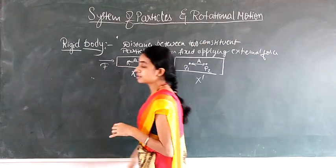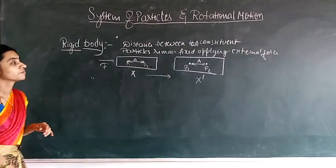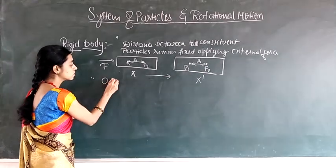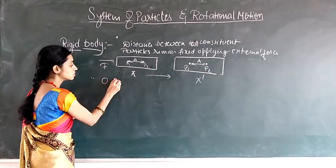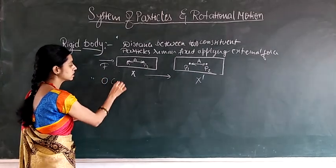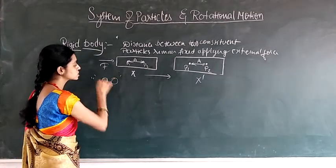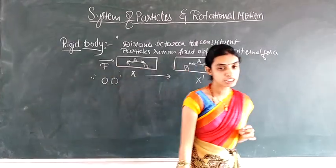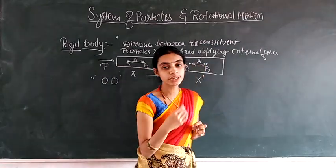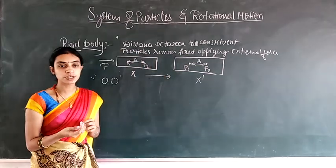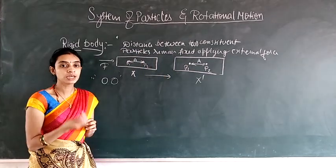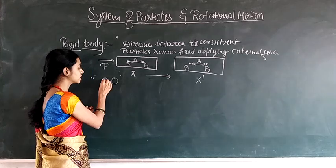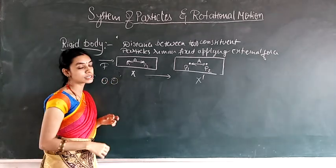If we consider a solid sphere, it is an example of a rigid body. When we apply external force on a solid sphere, the distance between the constituent particles remains essentially fixed.